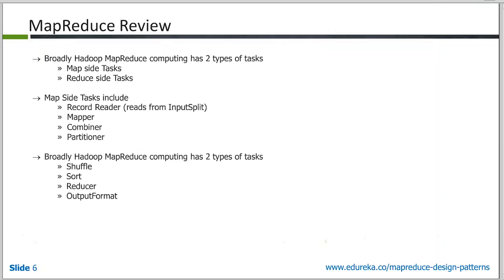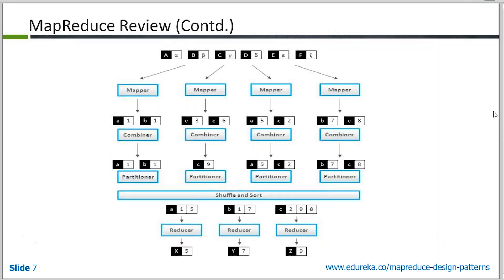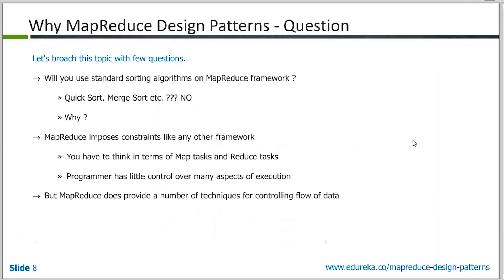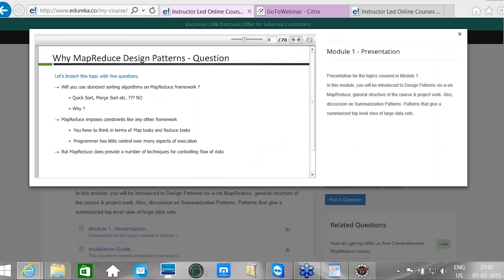Then the reducer — this is where most of your analytics and the actual crux of the work happen. And ultimately, the output from the reducer is put to HDFS by the output format. That's a very quick summary of what the MapReduce design pattern components are all about. I just wanted to emphasize these because these are the tools in your hands. When you're writing MapReduce programs and learning about design patterns, these are the tools you'll have, and you will have to manipulate these in some ways to achieve your objectives.